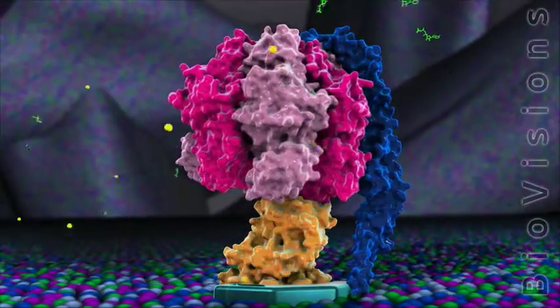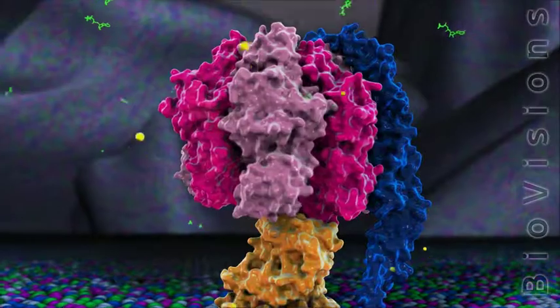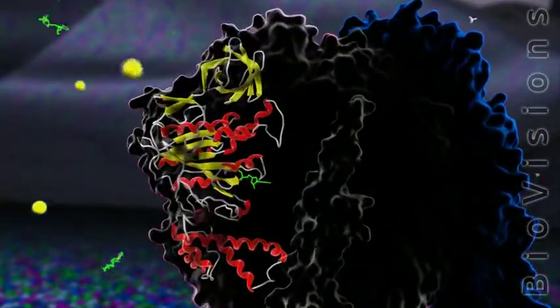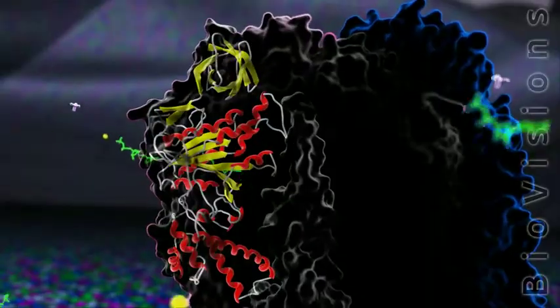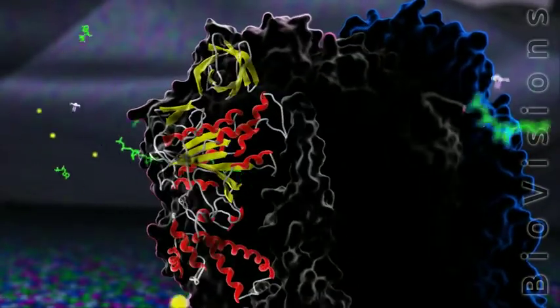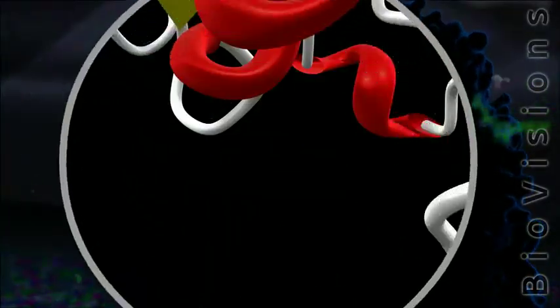Interactions with the rotating central stalk cause conformational changes in the alpha and beta subunits, which we can see here from the ribbon view of a beta subunit. During one complete central stalk rotation, beta subunits shift between three distinct conformations, each corresponding to a key step in the ATP synthesis reaction, which we can view in the active site.